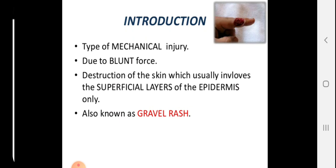To differentiate: subcutaneous tissue injury is a bruise — a collection of blood. A laceration involves the superficial layer through to the subcutaneous area and even deep tissue, affecting every single layer.